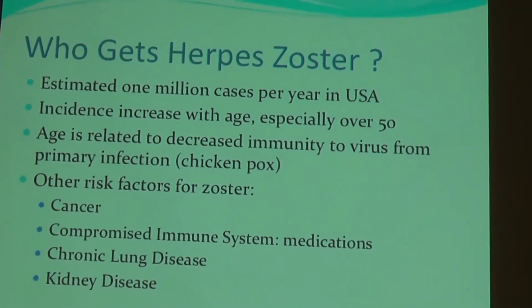So who gets herpes zoster? An estimated one million cases occur in the United States every year. Its incidence increases with age, especially over the age of 70. Age is related to decreased immunity to the virus — the immunity we gain at the primary infection or chicken pox. Other risk factors for developing zoster include having cancer or a compromised immune system. Medications such as steroids, chemotherapies, or drugs used to treat rheumatoid arthritis or inflammatory bowel disease can compromise your immune system. Patients with chronic lung disease or kidney disease are also at increased risk.